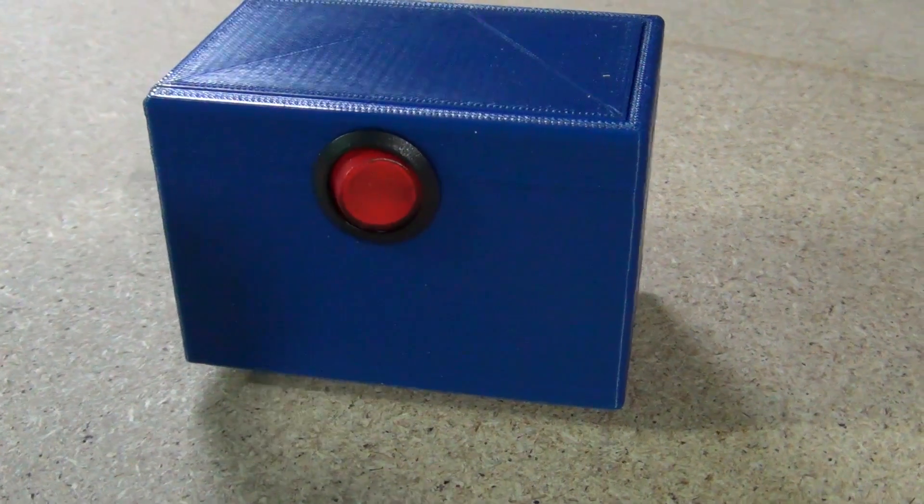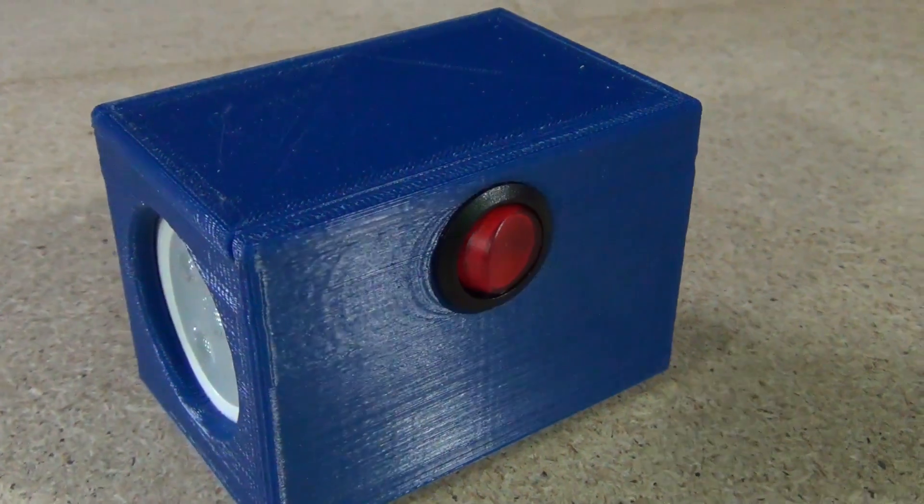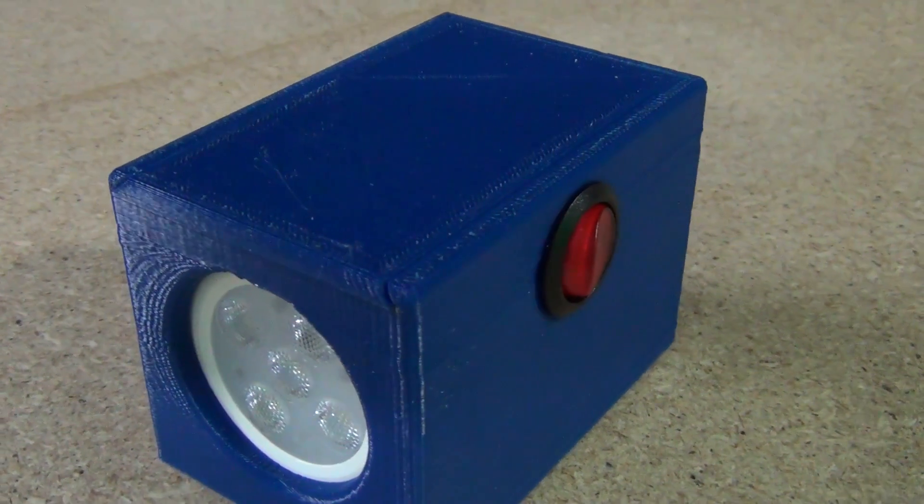So in this video I'm going to show you how to put together a little cube light. Now this is a nice and simple DIY project. You don't even need a soldering iron if you don't have one.